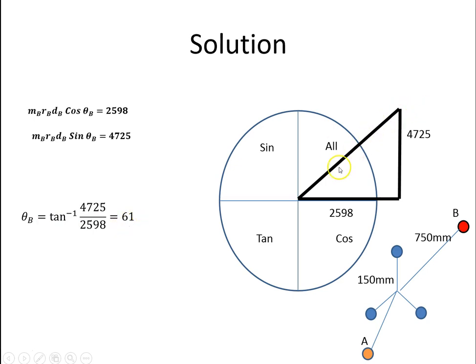If I want to get the length of this, which is MbRbdB, I just get the square of these two sides and square root the answer, and that comes to 5392. I know Rb was 750 millimeters because we were told that, and I know the distance out to B was 1.9 meters. Just rearranging that, I get 3.78 kgs.